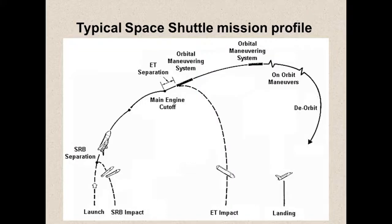Then you get external tank separation. The external tank comes down about 9,000 miles downrange and lands in the Indian Ocean. You use the orbital maneuvering system — the OMS pods on the back of the orbiter — for a short period to do your final tune to get into orbit. Then you have your on-orbit operations, whatever you're doing — servicing Hubble or whatever. You de-orbit with the OMS engine, have entry interface at 400,000 feet where you start sensing about 0.05 G's, and re-enter landing at Edwards or Kennedy.